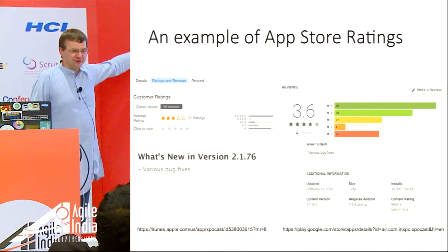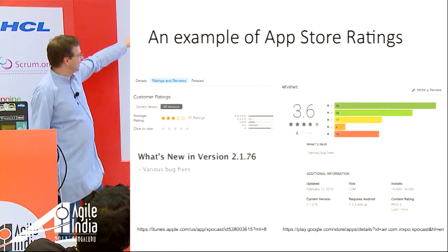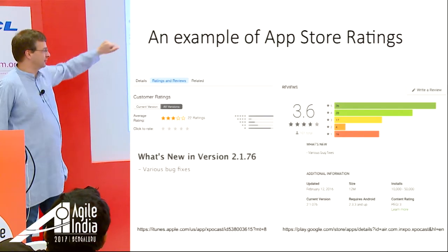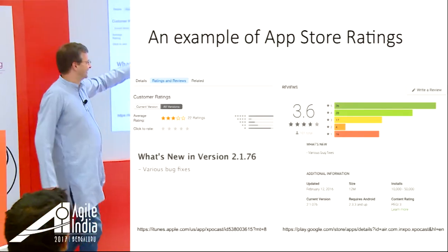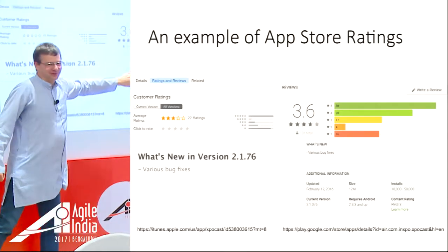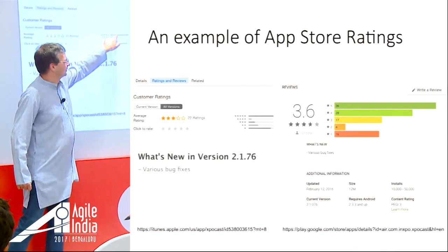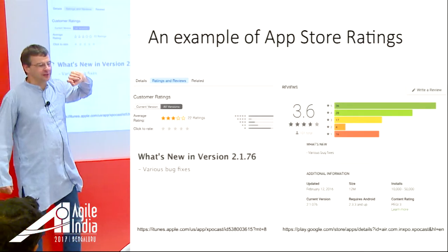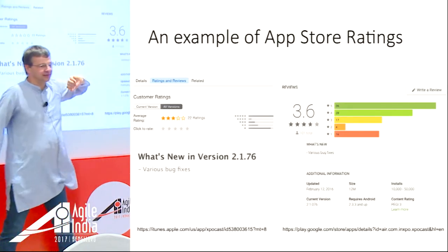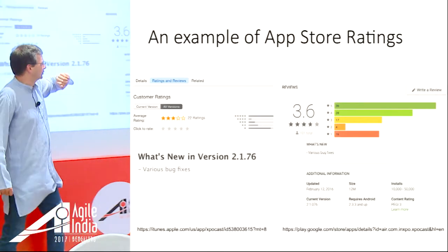Most of us have got a smartphone and installed applications. This is the iOS view of an application — a conference app, which has three stars. The Android side shows a very typical semi-horseshoe shape of feedback: quite a lot of one-stars, quite a lot of five-stars, with some distribution in the middle, and here quite a lot of four-stars as well.